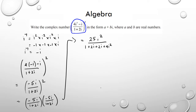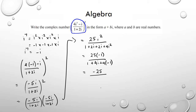Substituting i² = negative 1: the numerator becomes negative 25. In the denominator I have 1 plus 4i plus 4 times negative 1, giving negative 25 divided by negative 3 plus 4i.